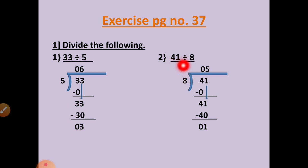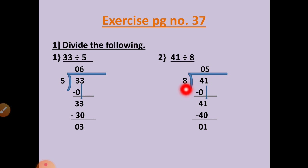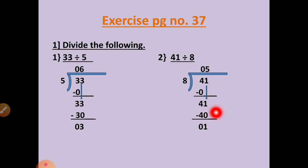Question 2: 41 divided by 8. Write 41 divided by 8. First we will take the first number. Here the first number is smaller than the divisor, so we will take 0. 8 zeros are 0. 4 minus 0 equals 4. Write next number down. Now this number is 41. In the table of 8, 41 is not there, but the smaller number is there — that is 40. 8 fives are 40. 1 minus 0 equals 1, 4 minus 4 equals 0.